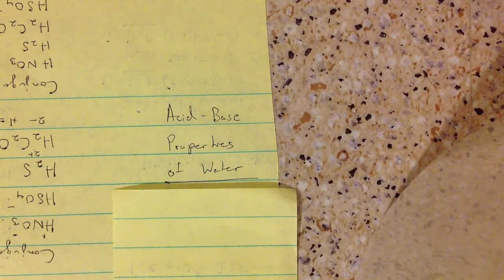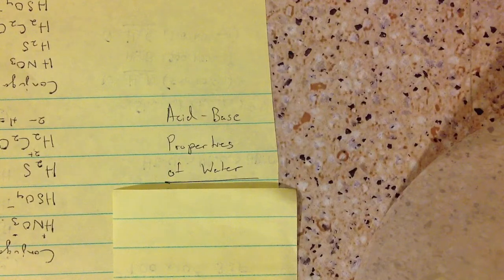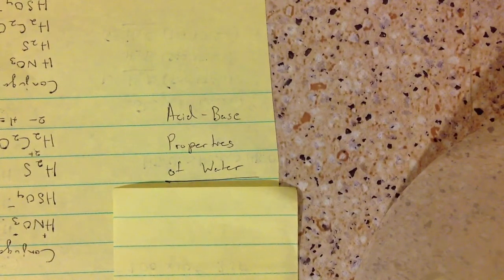This video will be about the acid base properties of water. So water is pretty unique that it can behave as a Bronsted acid or a base. This is called amphoteric.